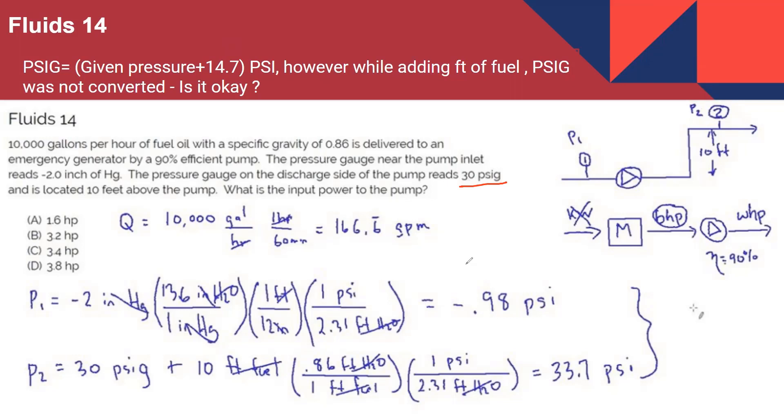You see like P2 equals 30 PSIG. So it should be 44.7 PSI, right? That's my question. There's a reason why I'm dragging you through this line of questioning.